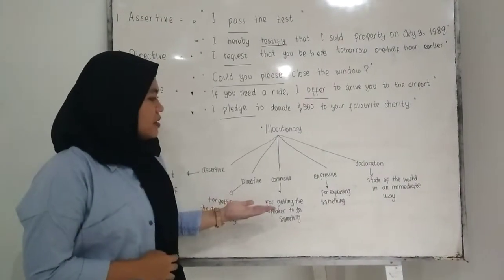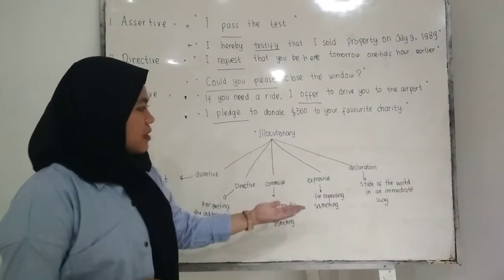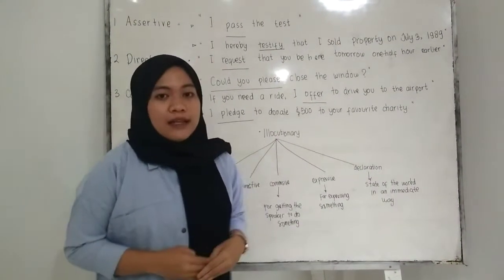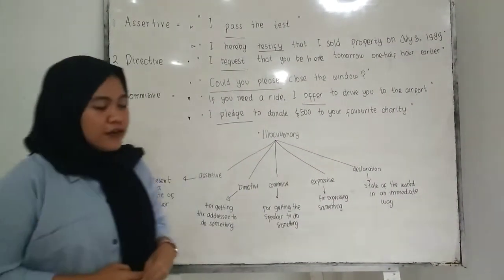The illocutionary act is divided into five types. The first is assertive, the second is directive, the third is commissive, the fourth is expressive, and the fifth is declaration.